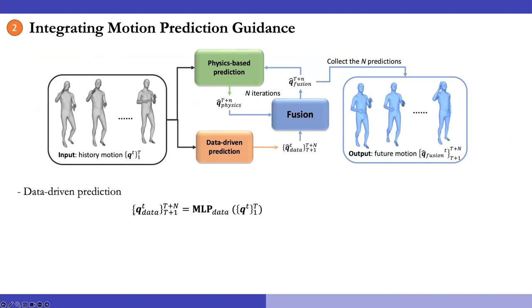The data-driven models employ recent state-of-the-art human motion prediction models that predict future motion from input history motion. Also, we introduce a fusion model that combines the physics-based estimates and data-driven estimates through a learned fusion weight. And we consider the output from fusion model as the final future motion estimates.